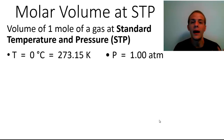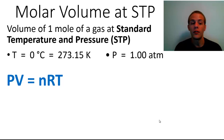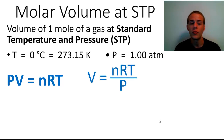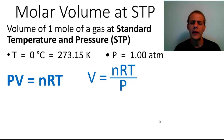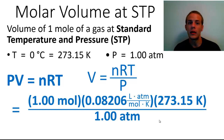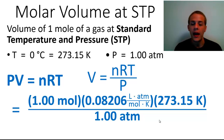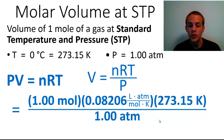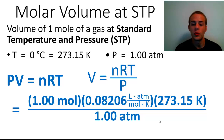To use the ideal gas law to determine the volume of one mole of a gas under these conditions, we start with PV equals nRT and divide both sides by P to get V equals nRT over P. We then plug in our values: n is 1.00 mole, R is 0.08206 liters times atmospheres over moles times kelvins, T is 273.15 kelvins (standard temperature), and P is 1.00 atmosphere (standard pressure).